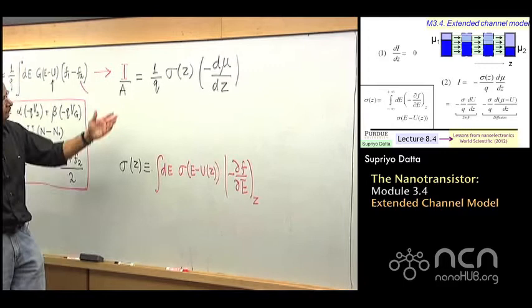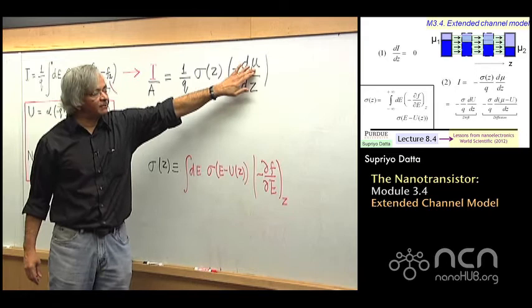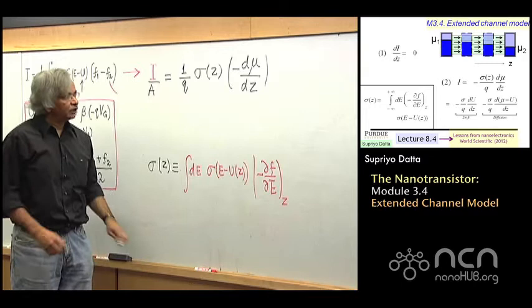So how do you apply this to a particular problem? You would actually first try to find how this chemical potential mu varies with Z across the device.